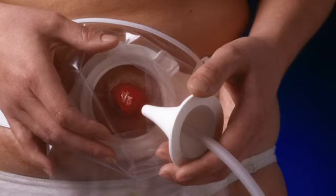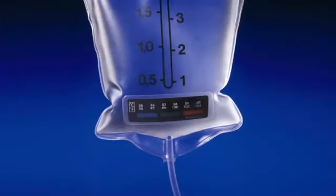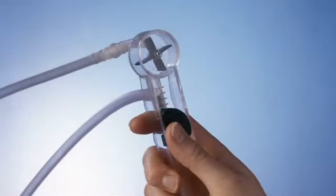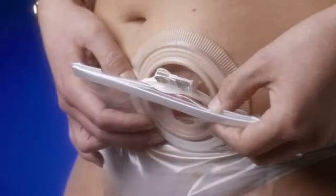To perform the irrigation procedure you will need an irrigation bag to contain the water for the irrigation, a cone to be inserted in the stoma and lead the water into the stoma, a regulator to regulate the flow of water into the stoma, and a sleeve to be attached to the base plate and lead the evacuation of feces from the stoma to the toilet.